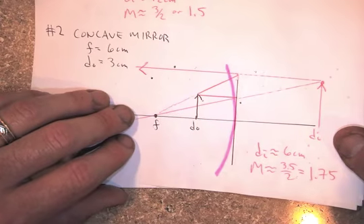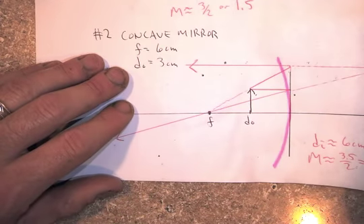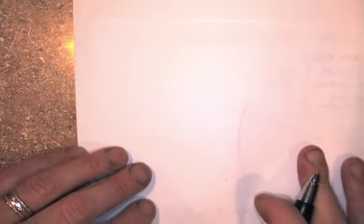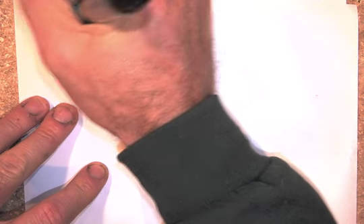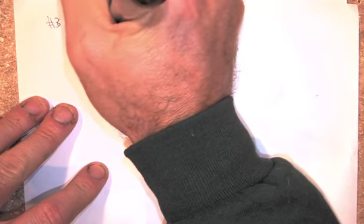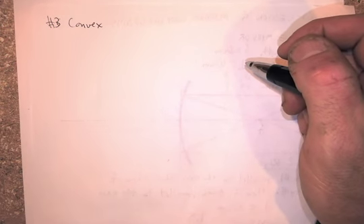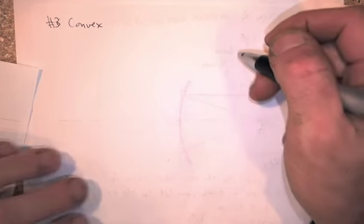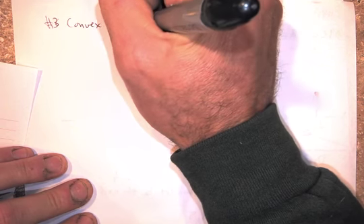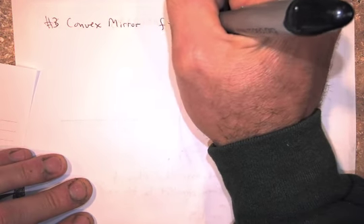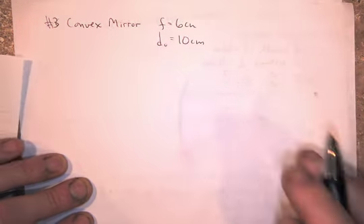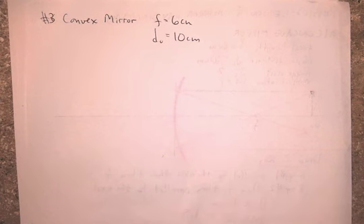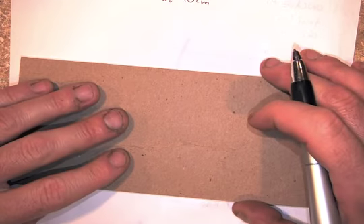We're going to keep going here, guys. We've got to do convex. These are concaves, right? So, number 3 is, here is a convex. We can actually get away with one more example here. Convex mirror, focal length is 6. Do is 10. Pretty much like that first example, except now we're going to say it's convex, so it's going to come out different. Draw our axis.